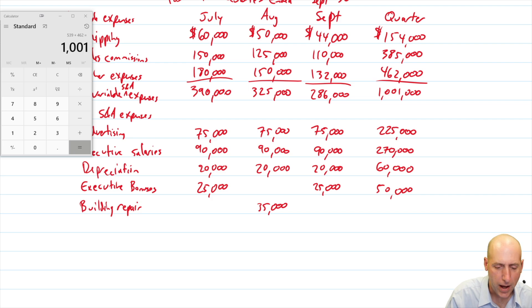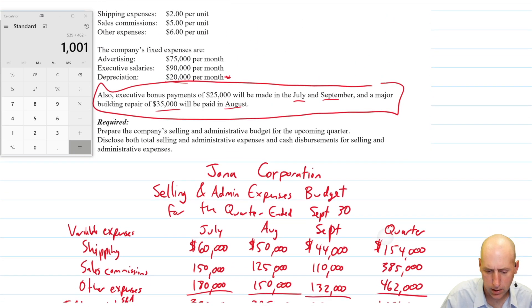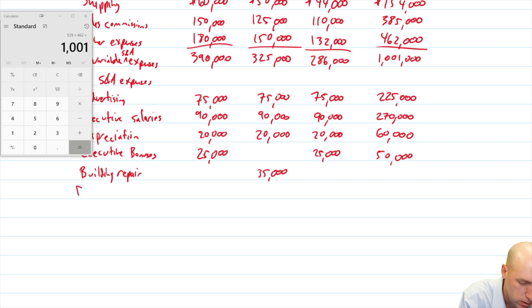Okay, that's it, right? We're not missing anything. So, let's add these up. Total fixed selling and admin expenses. Let's see. 75 plus 90, plus 20, plus 25, 210.